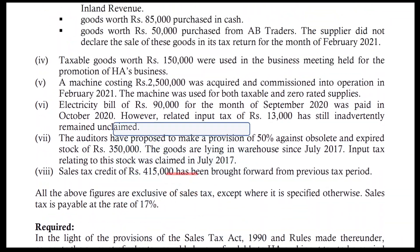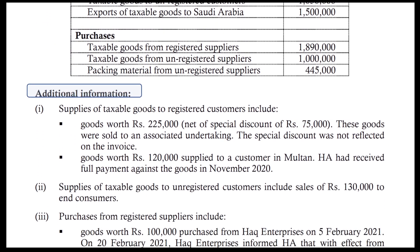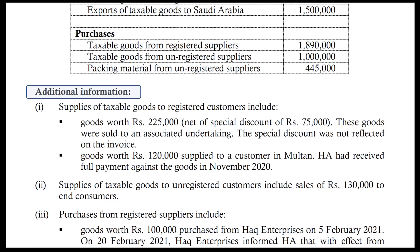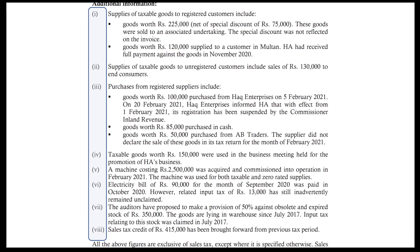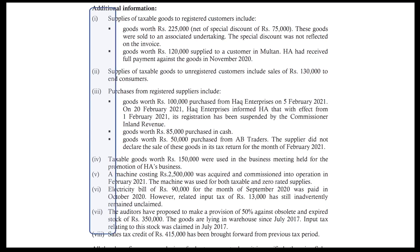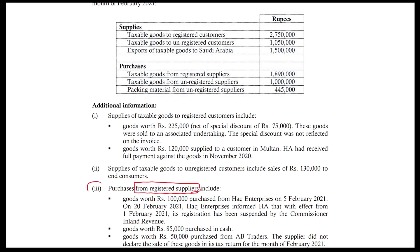Let's do some planning. An answer plan will help you organize your answer. In a sales tax question, an important piece of information in the first paragraph is always mentioned — find out whether the business is a manufacturing business or not, as this has an impact on our solution. Here it is a manufacturer-cum-importer. Some figures are mentioned in a table, and after this table, the question provides some additional information. You should read this additional information carefully and mark it to the table. There are a total of 8 paragraphs in additional information — some will be independent and some will be related to the table. Paragraphs 1, 2, and 3 have some relevance to the table. Write down the paragraph numbers in the table so that you may not skip any additional information.